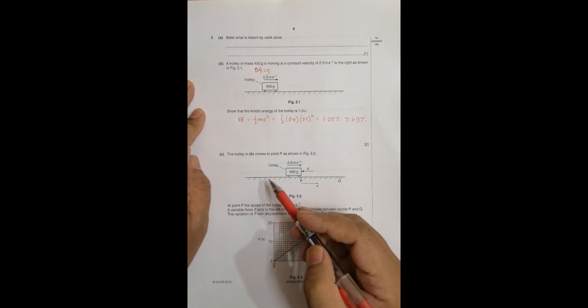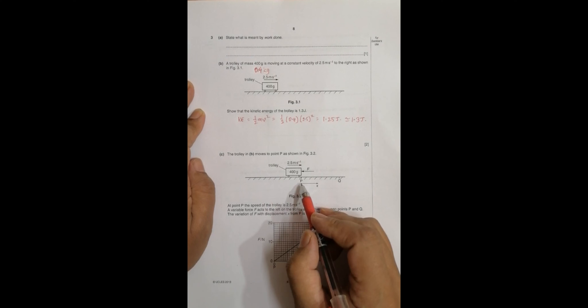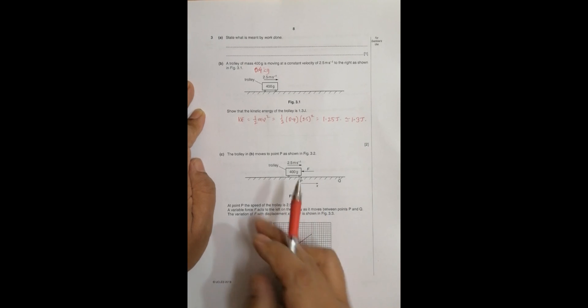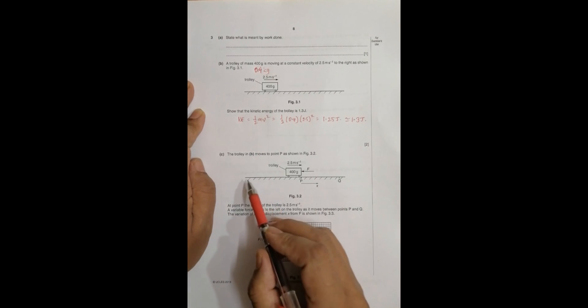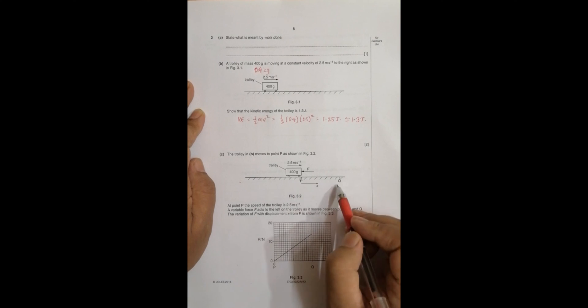Okay, now in part b, the trolley moves to point P as shown in figure 3.2. At point P, the speed of the trolley is 2.5 meters per second. So till this point, nothing has been done. A variable force F acts to the left on the trolley as it moves between points P and Q. So from here to here, there is a constant opposing force applying on the body.